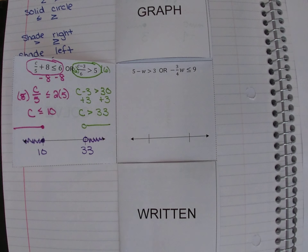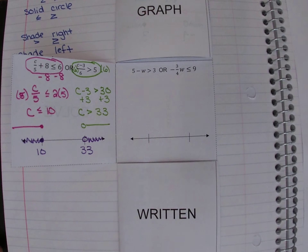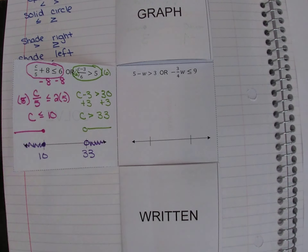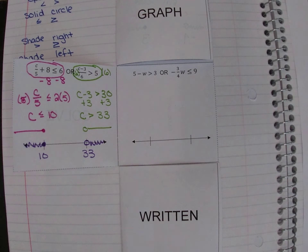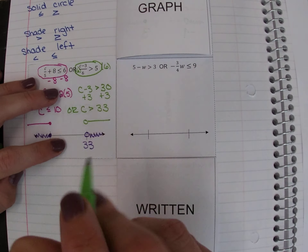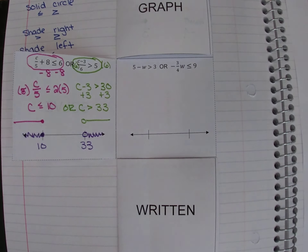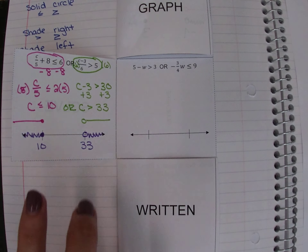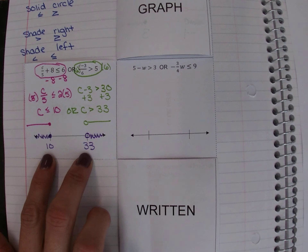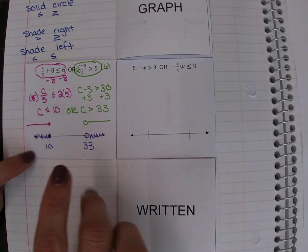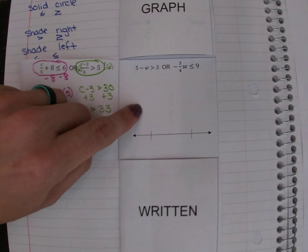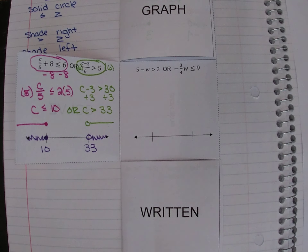So the final solution is: c is less than or equal to 10, or c is greater than 33. This is what the graph looks like on the number line. But graphs don't always look like this, so let's look at the next problem.